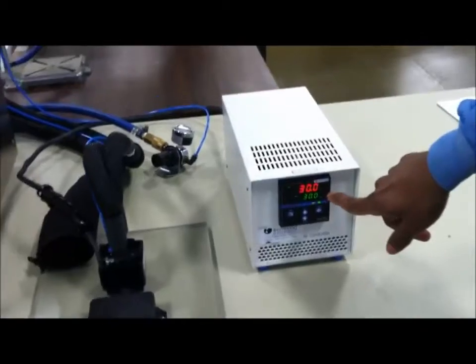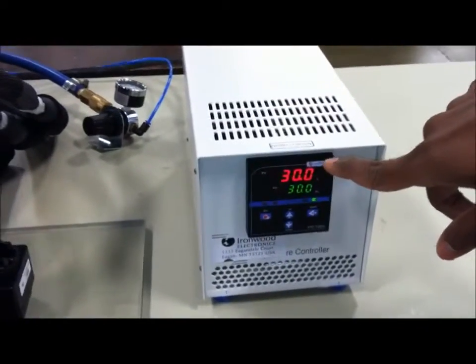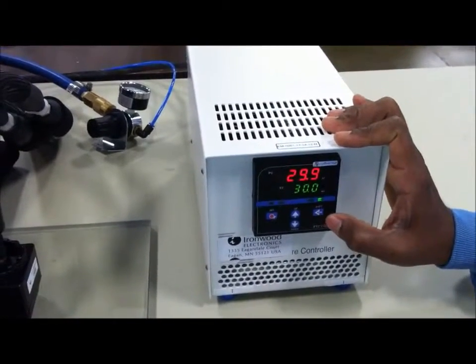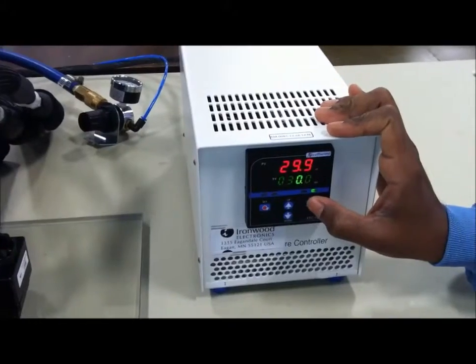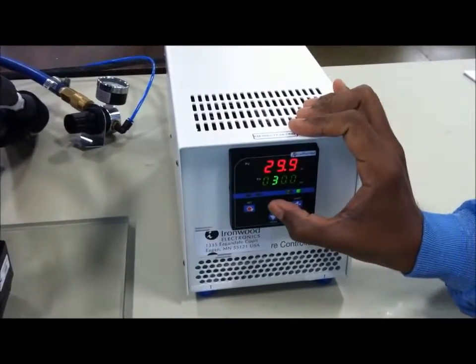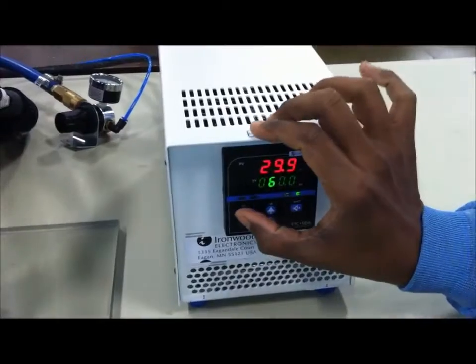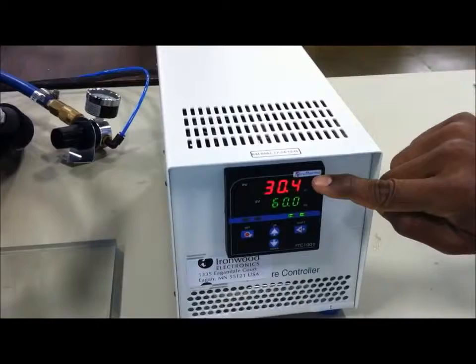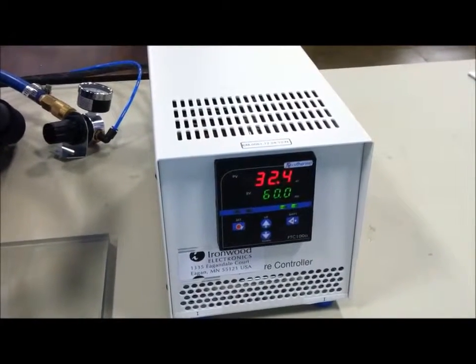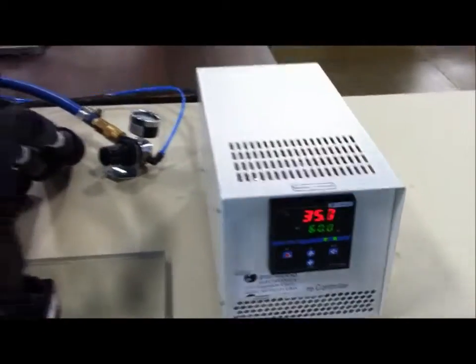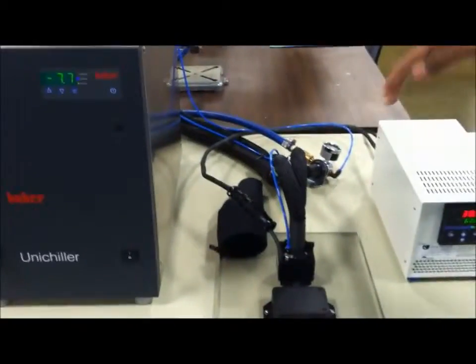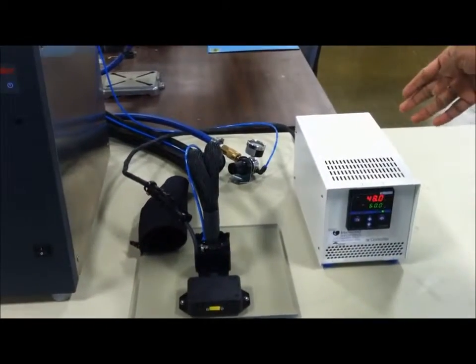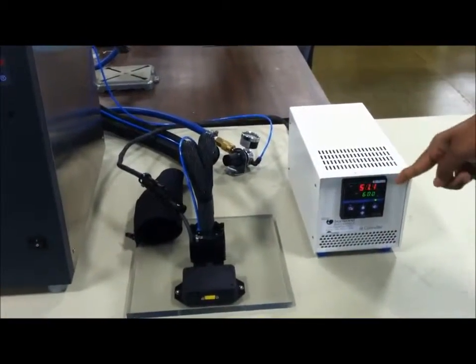Now, the controller is set at 30 degrees C and the present value is 30 degrees C. I am going to change this controller to 60. I am setting it up. You can watch the present value going up. There is a Peltier module inside the head.